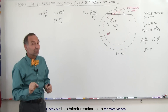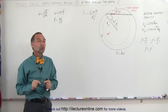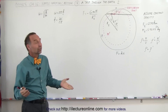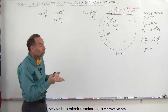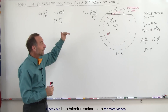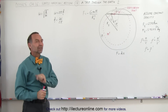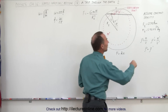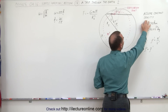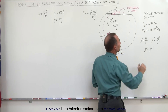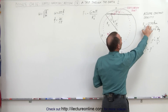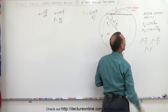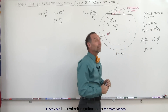In the previous video we saw that it would take 42.2 minutes to make a one-way trip right through the center. So the question is: would it also take 42.2 minutes to travel at any angle through the earth? Let's find out. We assume constant density throughout, which we know is not true. The radius of the earth is 6,378 kilometers and the mass is 5.98 times 10 to the 24 kilograms.